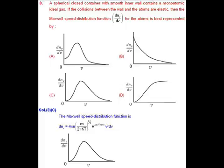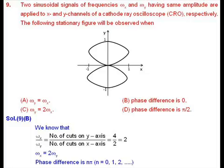We know that the Maxwell speed distribution function is dnv equals 4 pi n in bracket m divided by 2 pi kt whole power 3 by 2, e to the power minus mv square divided by 2kt, v square dv. By this equation, the graphical representation between dnv by dv and v will be according to option C.